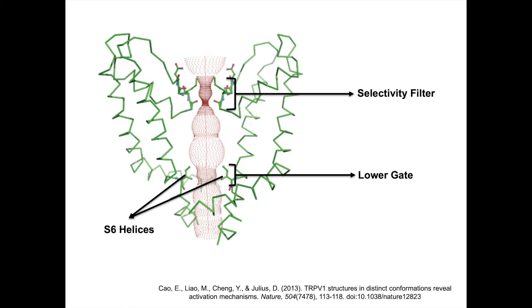When capsaicin binds, both the selectivity filter and the lower gate are dilated. In this fully open state, the selectivity filter is still the narrowest part of the pore, which ensures that only sodium and calcium ions can pass.